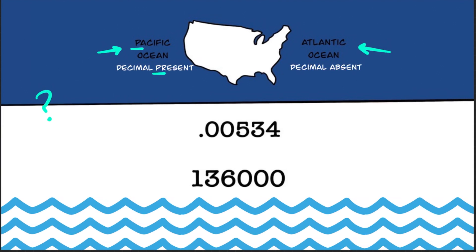Notice how they both start with a P. While Atlantic will signify that a decimal is absent — notice how they both start with an A.